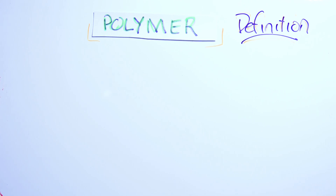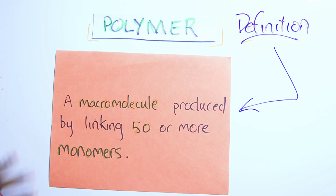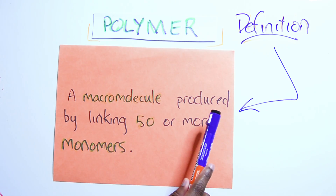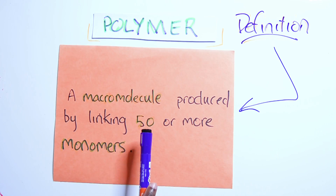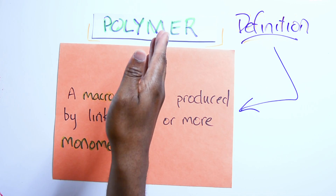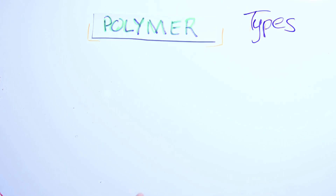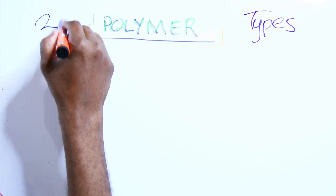The first thing you should know about polymers is the definition. A polymer is a macromolecule produced by linking 50 or more monomers. Macromolecule, 50 or more monomers make a macromolecule — call that a polymer.